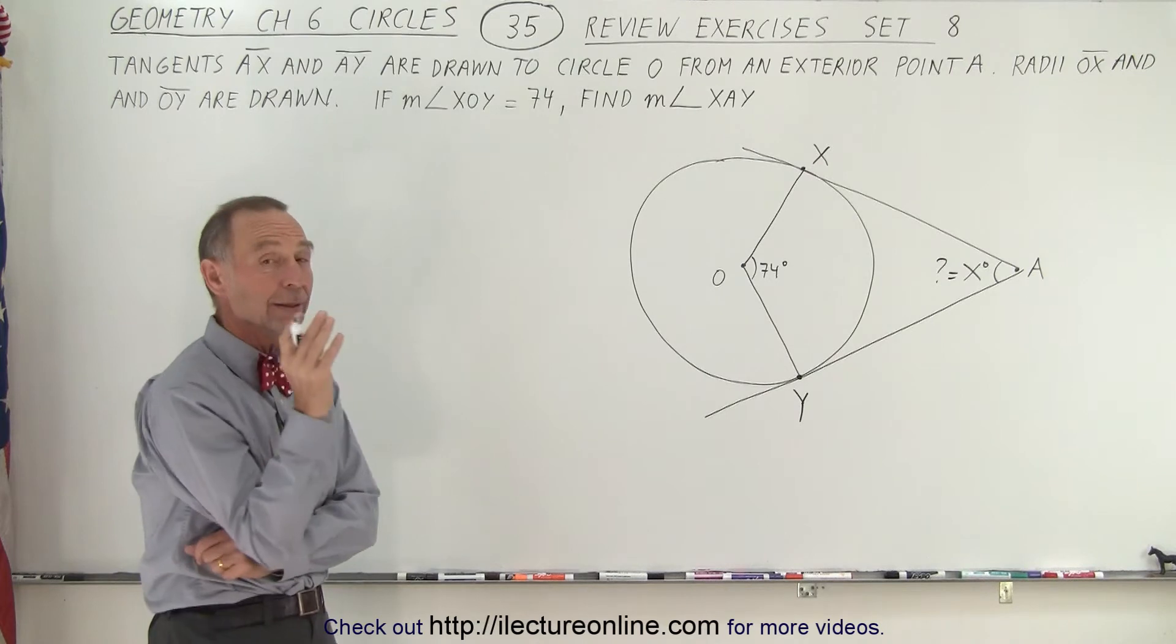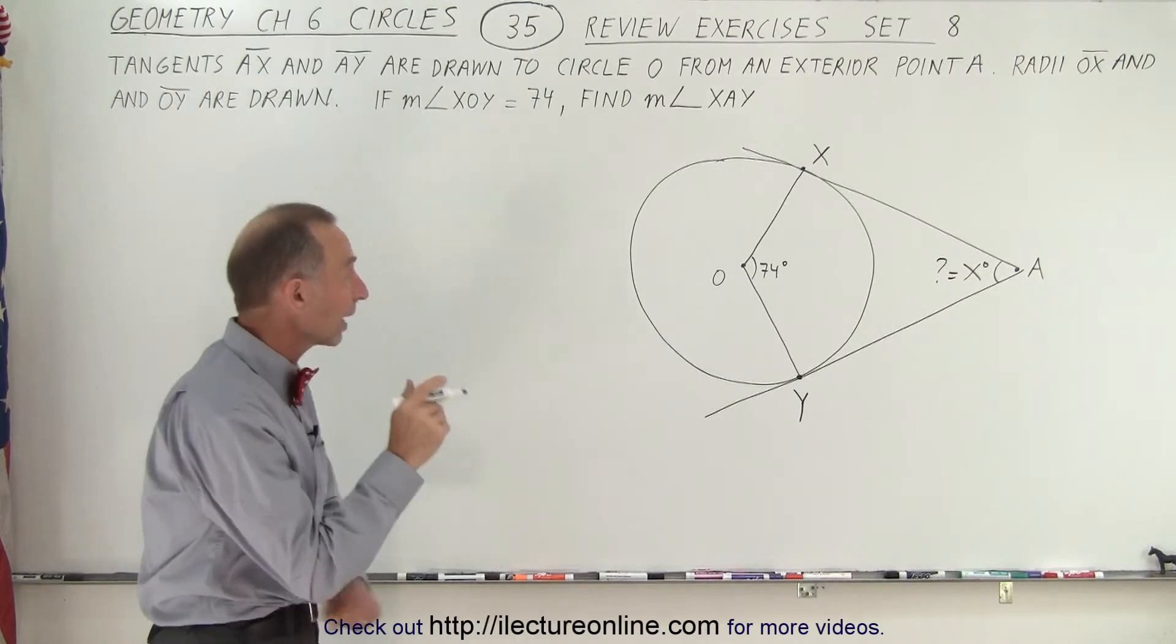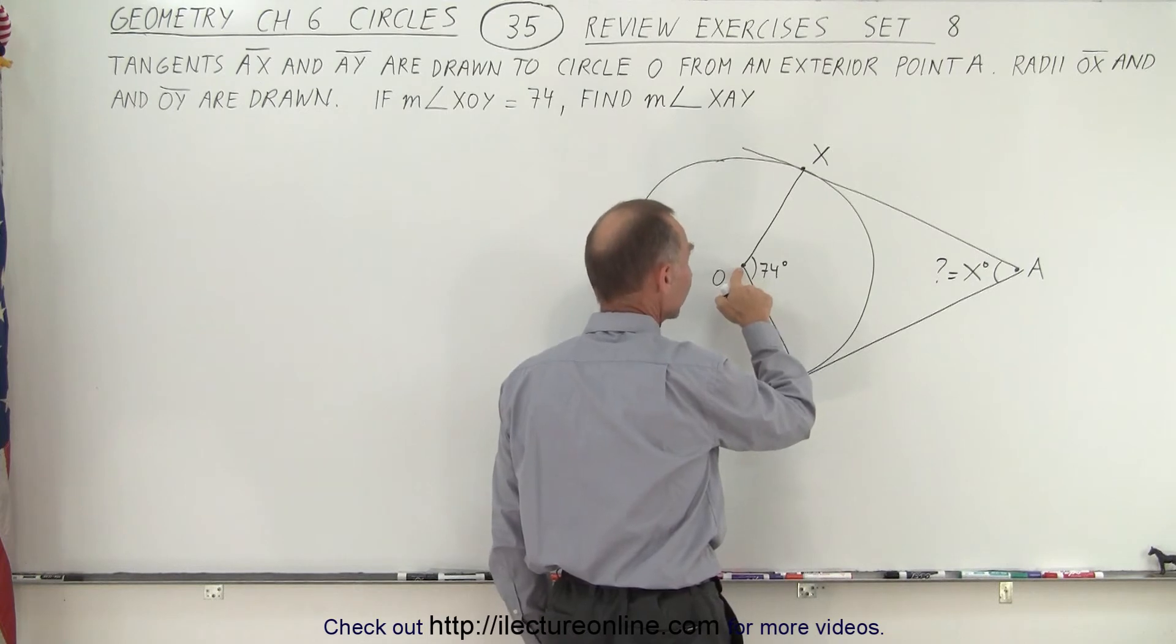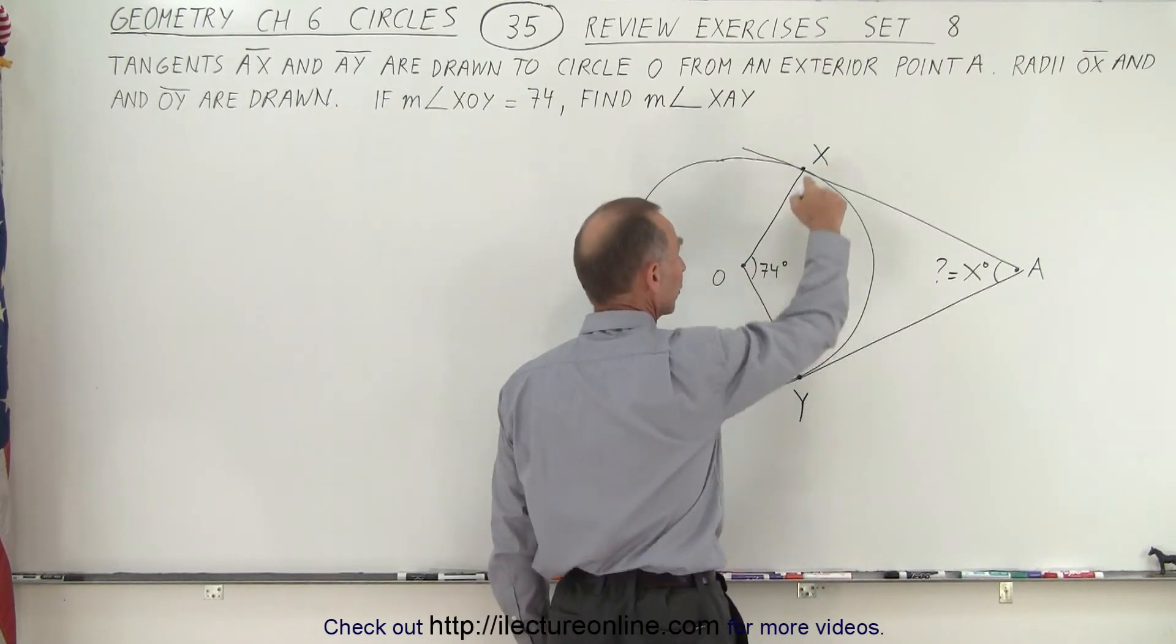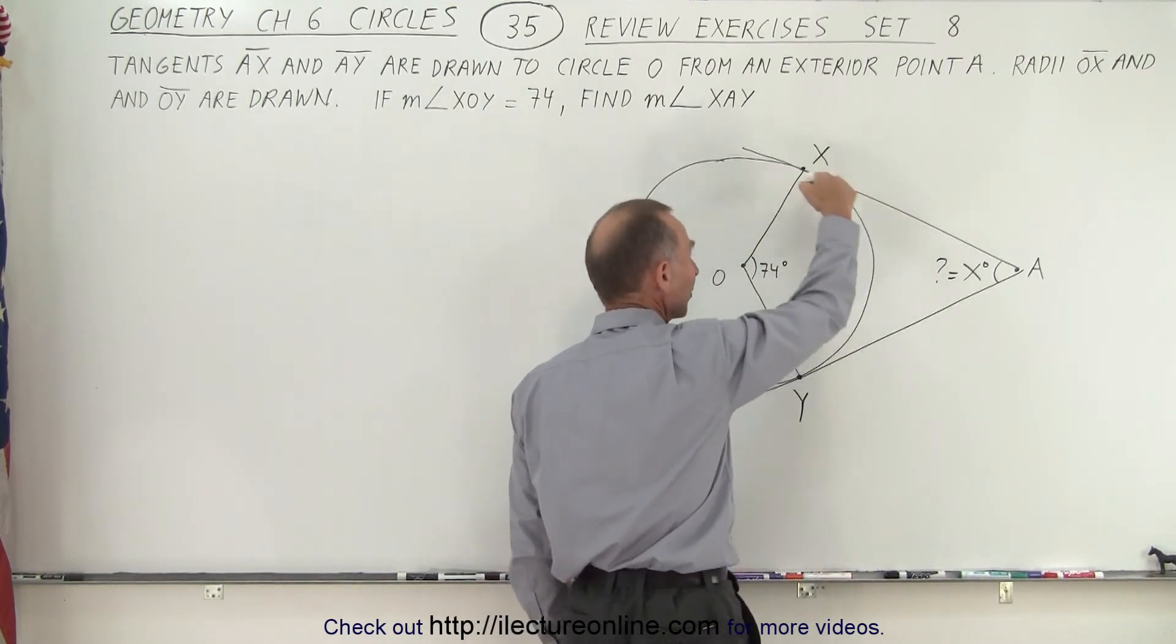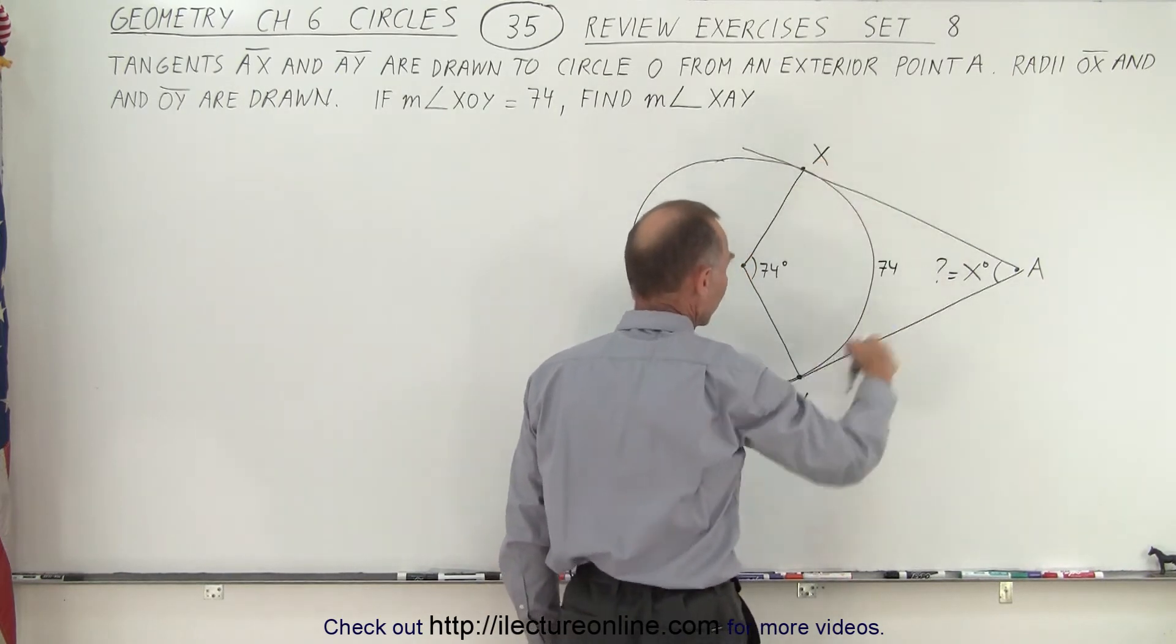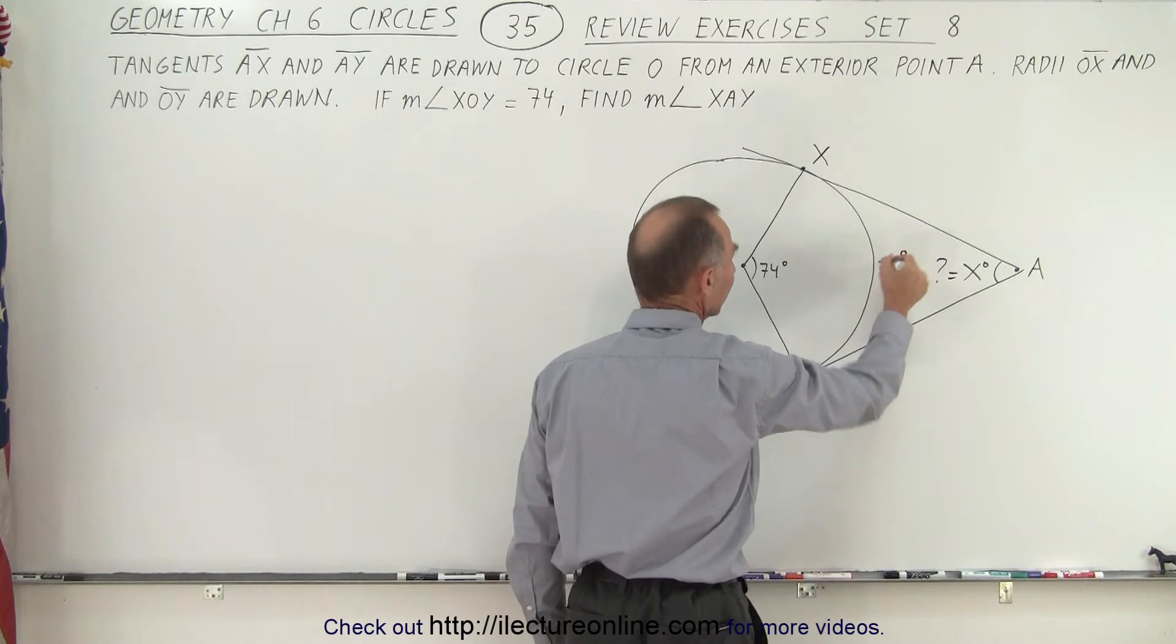Alright, well, what we can say is that if the measure of this angle, and we have a point at the center of the circle, is equal to 74 degrees, then this measure here must be 74 degrees as well. So the measure of the arc from X to Y on this side must be 74 degrees.